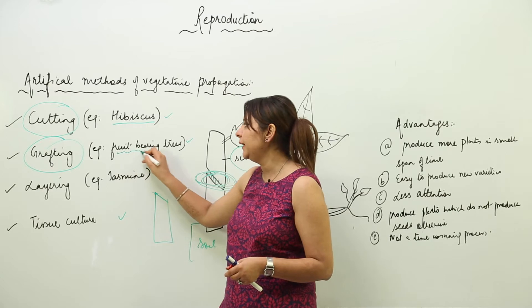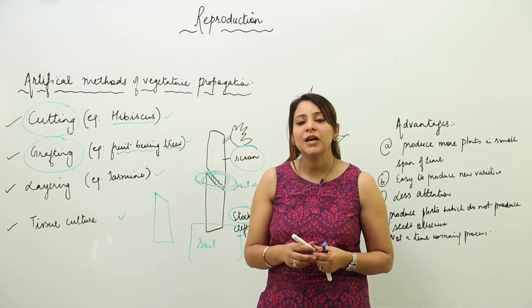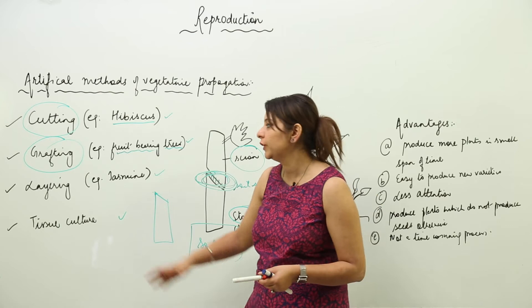Grafting is mainly seen in fruit-bearing trees, particularly those which have woody stems, as it is best suited for them.